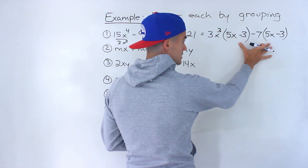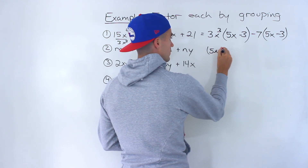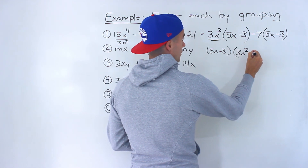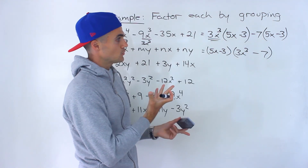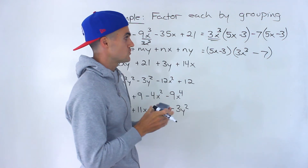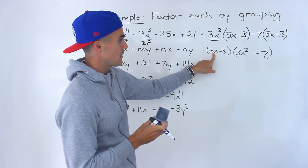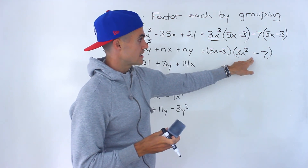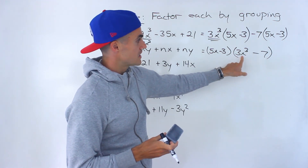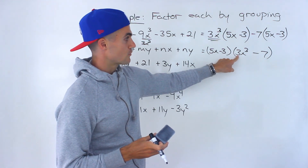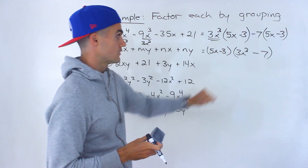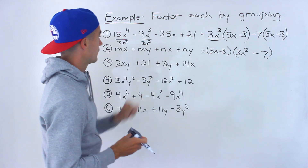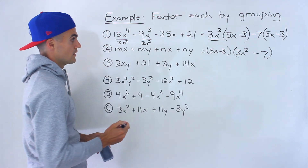Now you take out the common bracket (5x minus 3) and you'd be left with 3x to the 3 minus 7. Then check if you can factor any of the remaining brackets further. Notice 5x minus 3 can't be factored, and 3x to the 3 minus 7 can't be factored further either, since the cube roots of 3 or 7 don't give integers. So this ends up being the final answer for number 1.